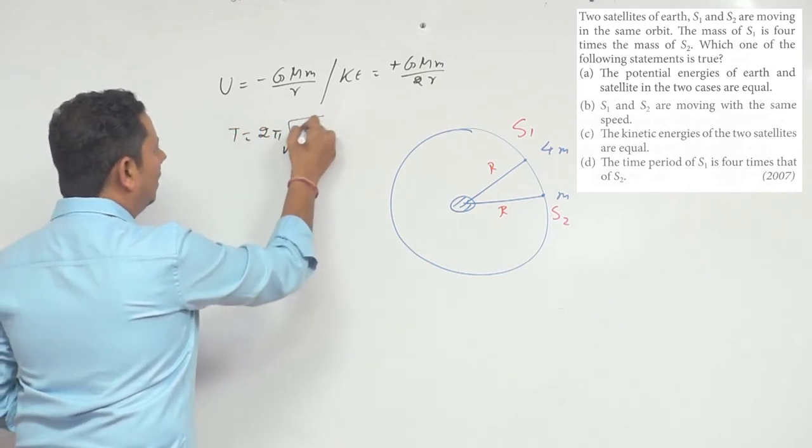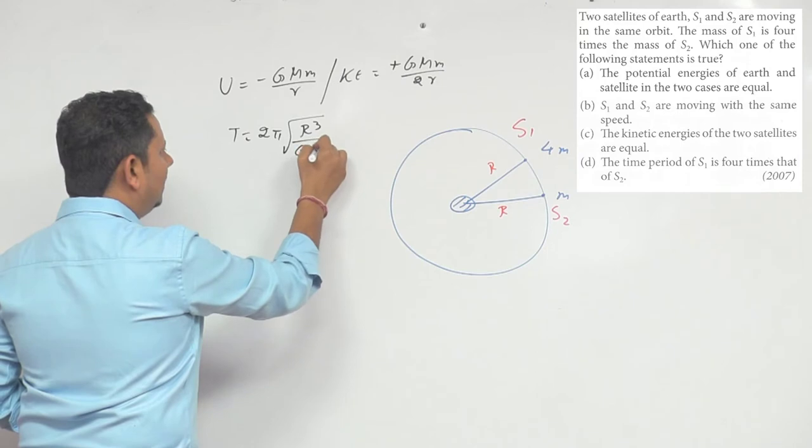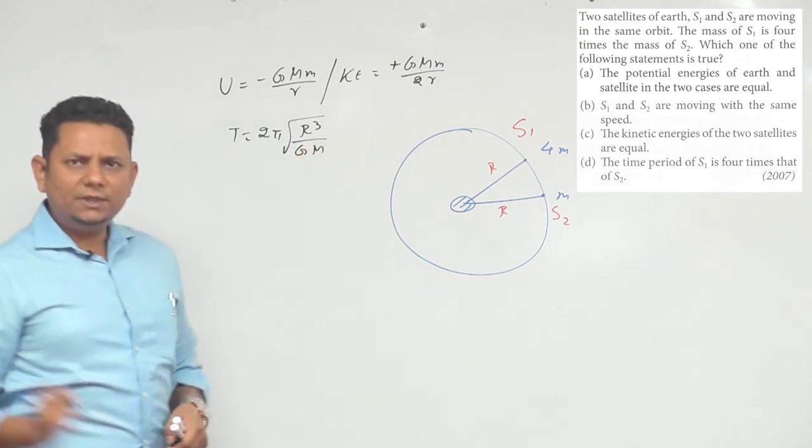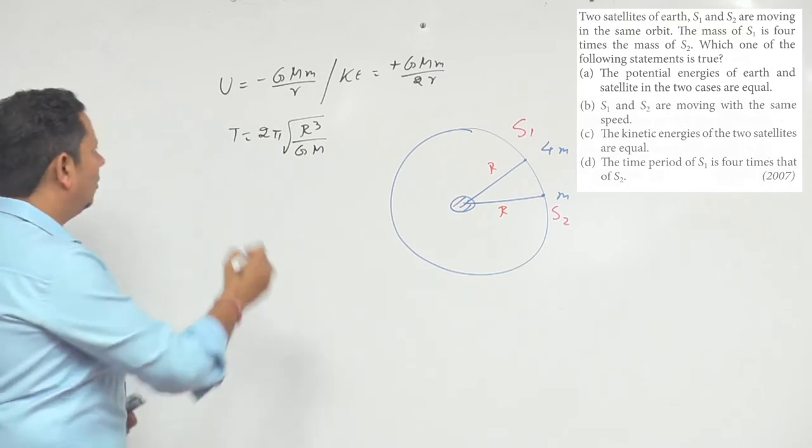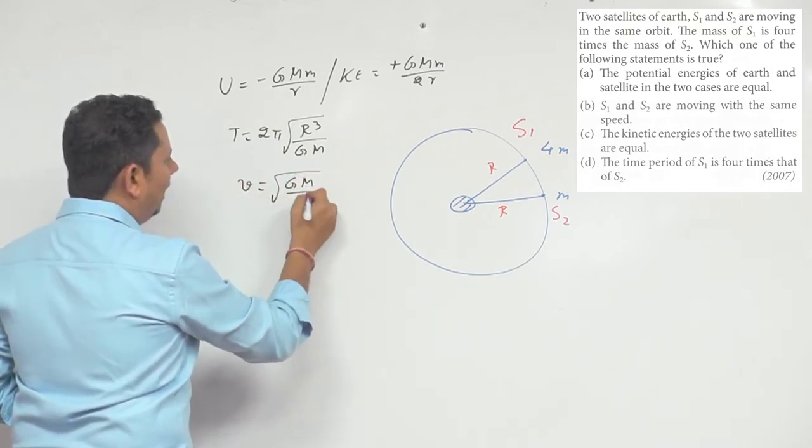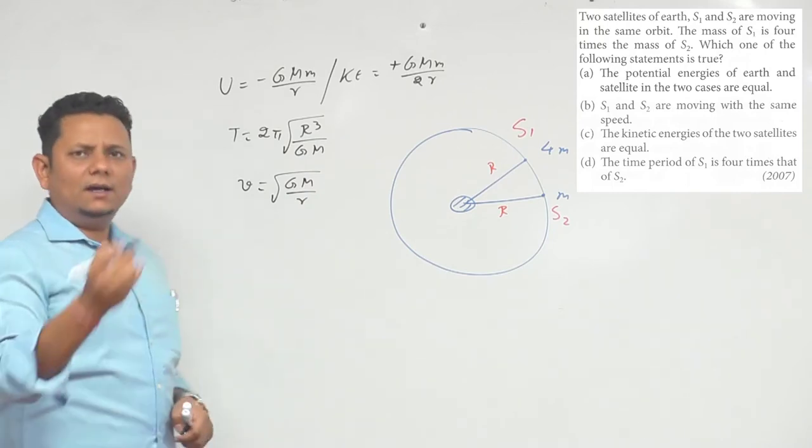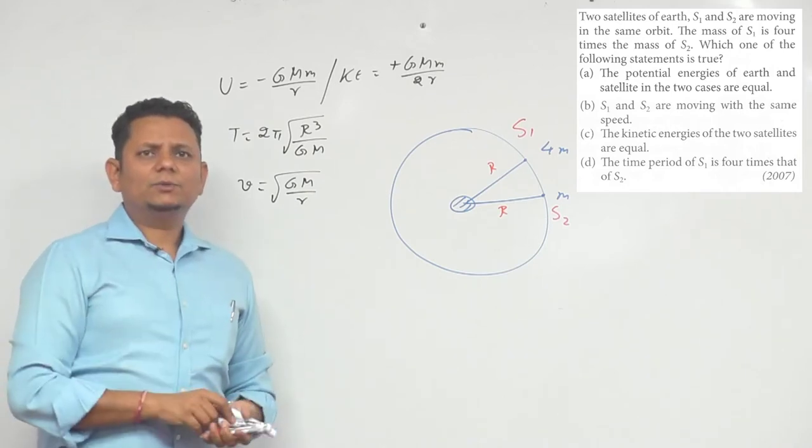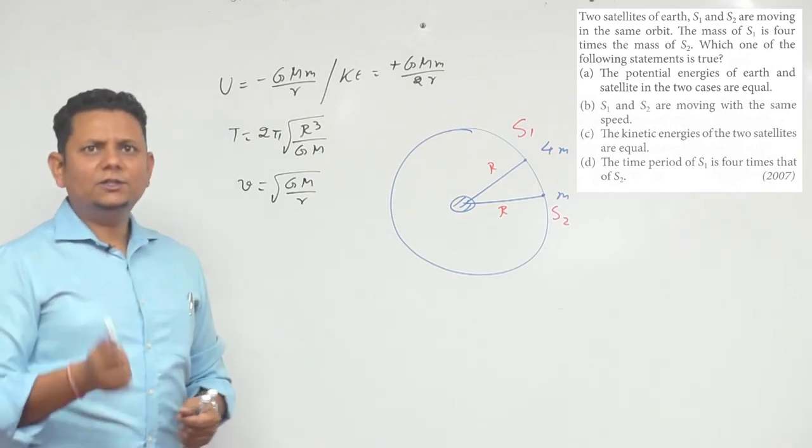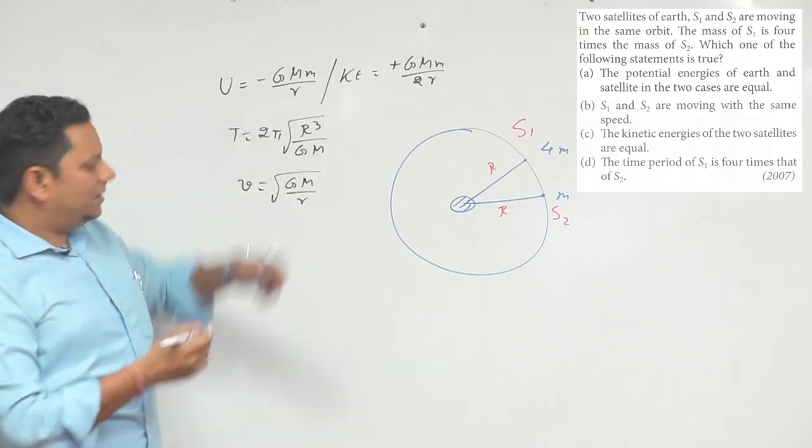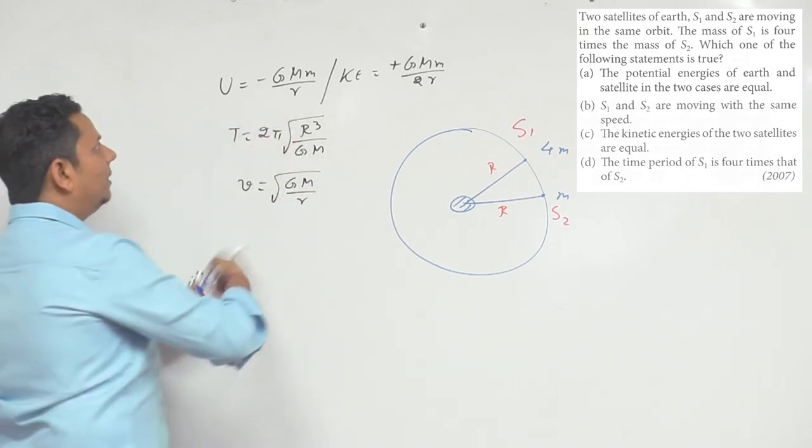Time period or orbital speed - speed from this. Speed is square root of GM divided by r, where r is the distance at which your satellite is moving.